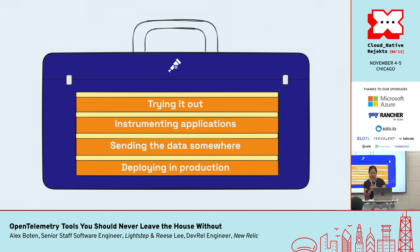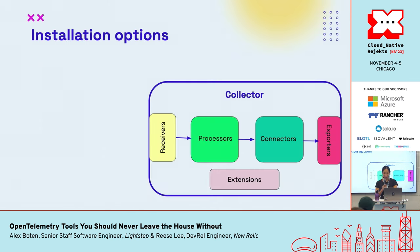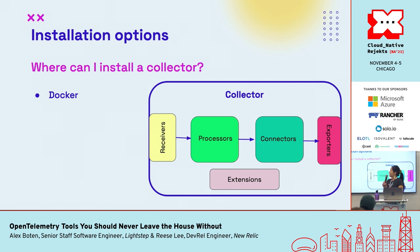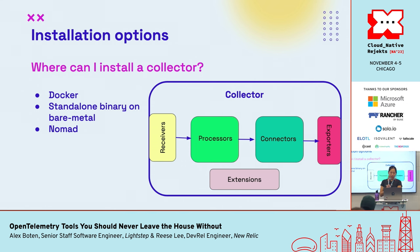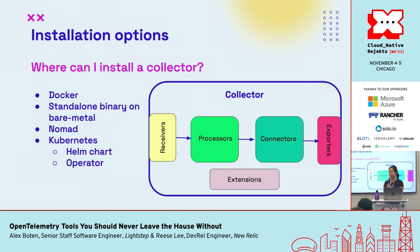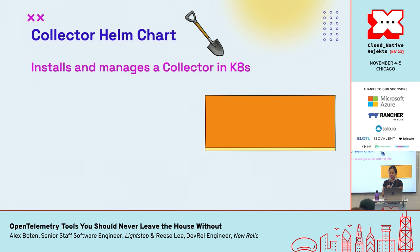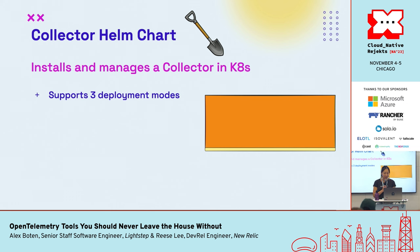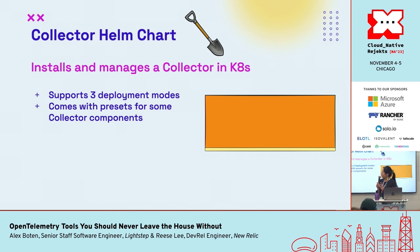When you are ready to deploy the collector into production, you have several options. You can use Docker, which is also great for running it locally. You can install it as a standalone binary on bare metal on Windows, Linux, and macOS. If Nomad is the orchestrator of choice, you can deploy it there. And of course, Kubernetes — which is probably most of you. The two main Kubernetes options are the Helm Chart and the Operator. The Helm Chart supports three deployment modes: DaemonSet, Deployment, or StatefulSet.